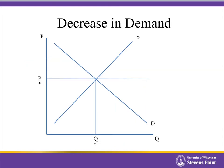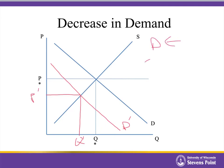Now let's look at what happens if we have a decrease in demand. Perhaps the good becomes less popular, or a recession causes consumer incomes to fall for a normal good. With a decrease in demand, the demand curve shifts to the left. If the price stayed the same, now we've got a surplus, and that surplus puts downward pressure on the price. The price starts falling until it reaches the new equilibrium point, moving along both supply and demand curves to the new equilibrium quantity. The equilibrium price goes down, and the equilibrium quantity also goes down.